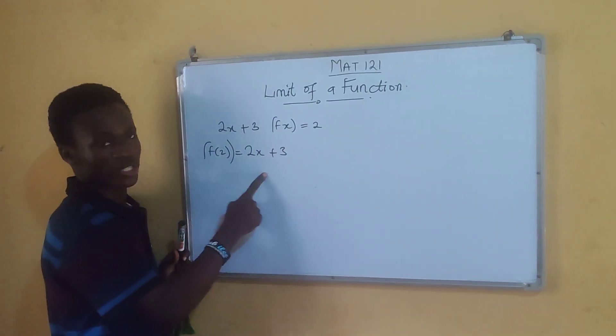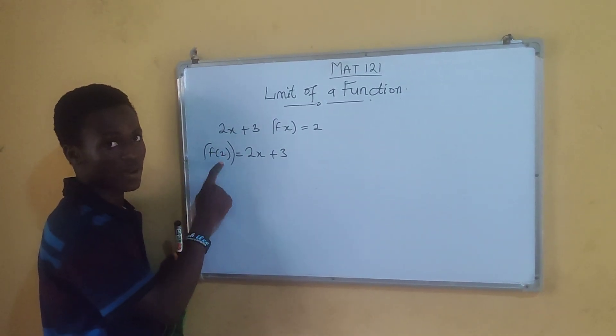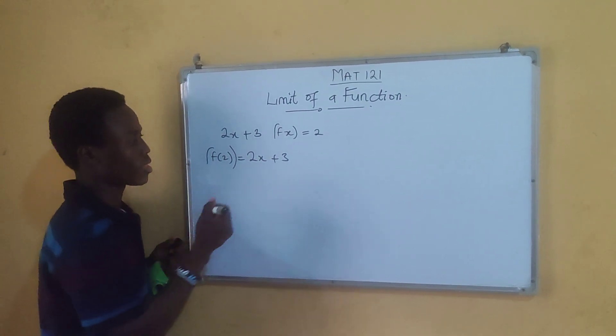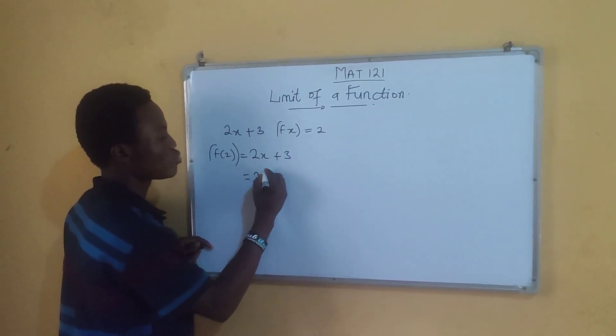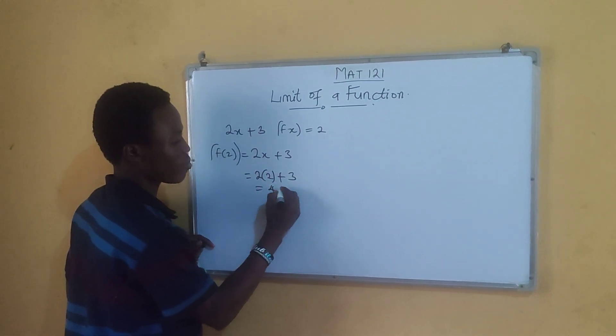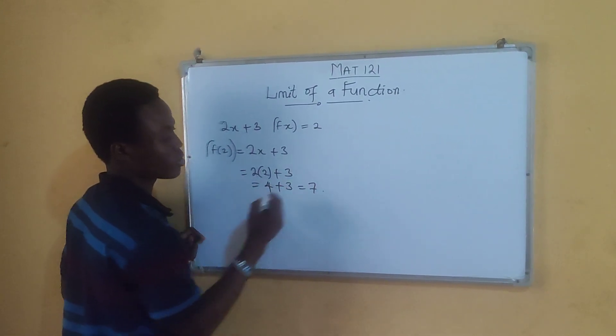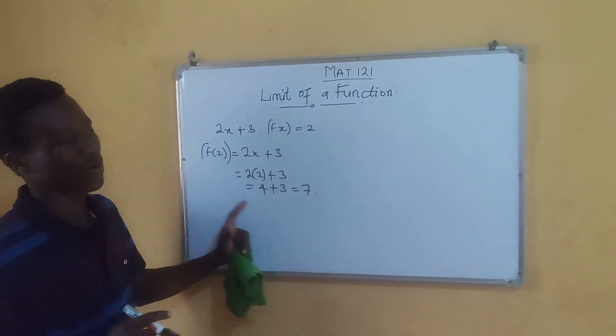That means that anywhere you see the function of x, you replace it with 2. That means the value of x here is equal to 2, which means that you can have 2 into 2 plus 3. So you have 4 plus 3, which is equal to 7. So this is an example of a function.